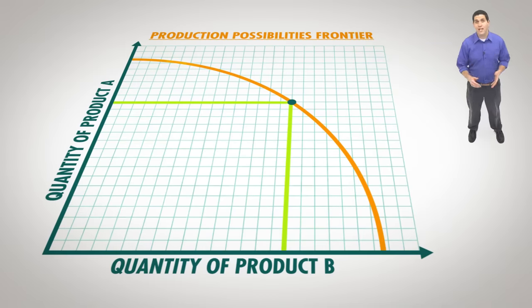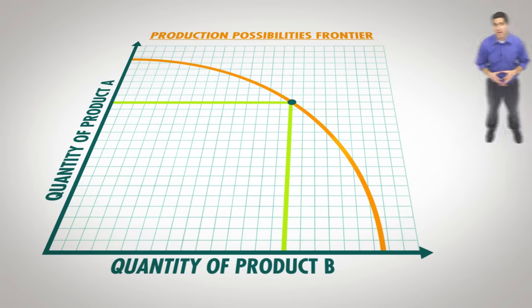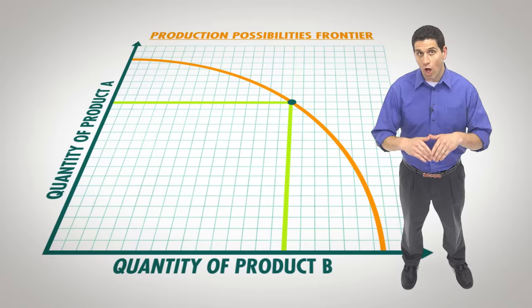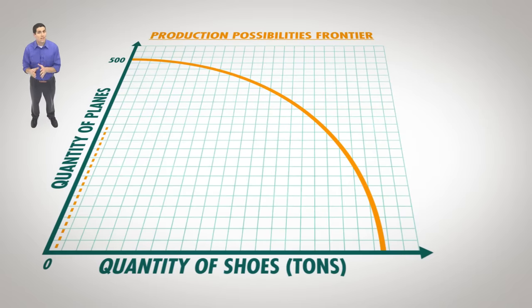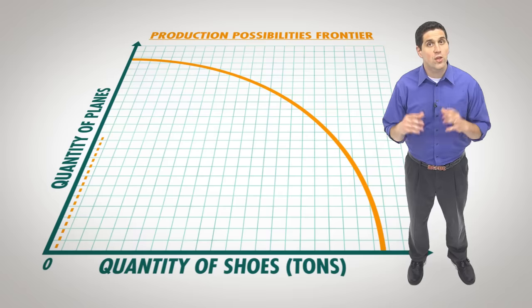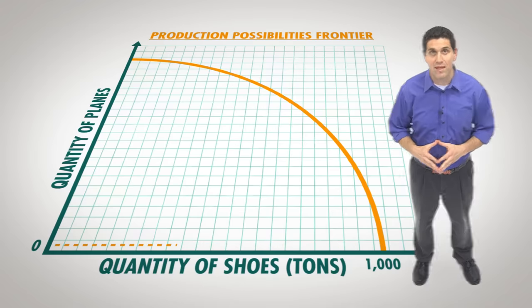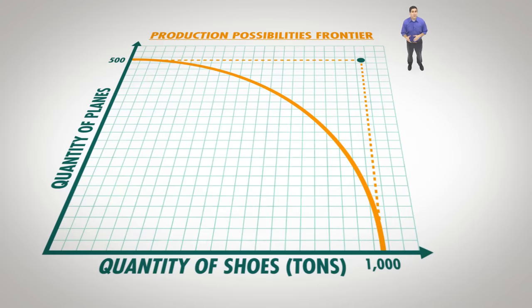This is the first graph you'll see in an economics textbook. It's called the Production Possibilities Frontier, or PPF. The PPF shows the different combinations of two goods being produced using all resources efficiently. If the United States uses all of its workers and factories to produce airplanes, it can produce 500 per day, but it can't produce any shoes. If they use all their resources to produce shoes, they can produce 1,000 tons per day, but they can't produce any planes. Because the United States has limited resources, they can't produce any combination beyond the Production Possibilities Frontier. So it's impossible to produce 500 planes and 1,000 tons of shoes.